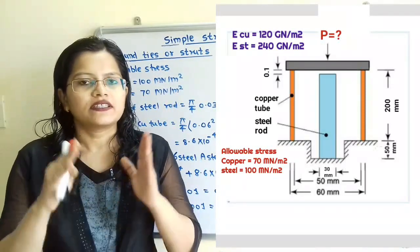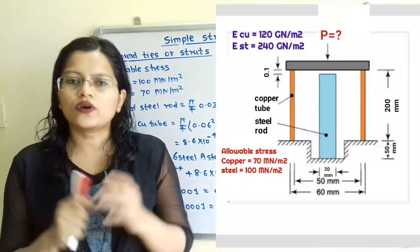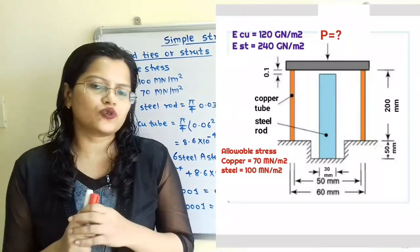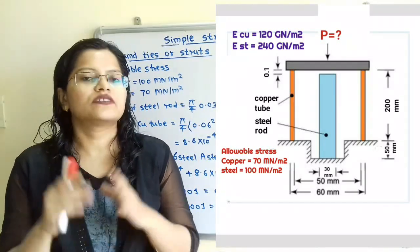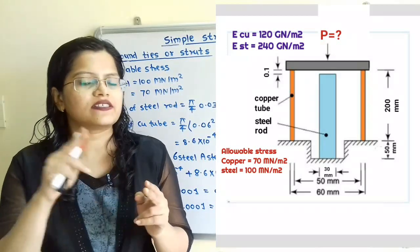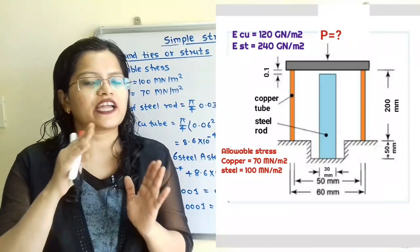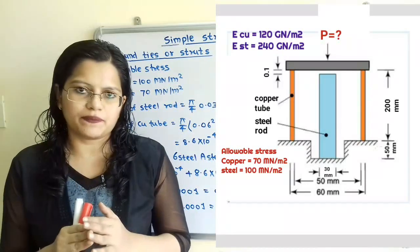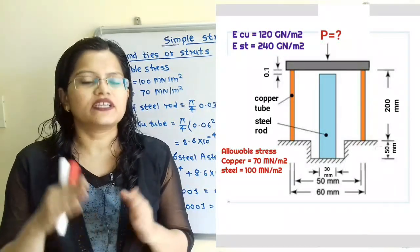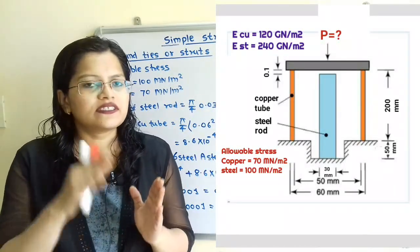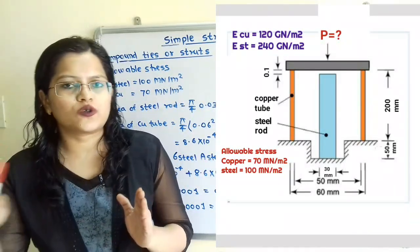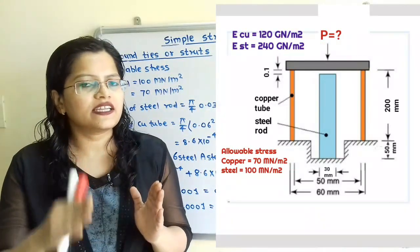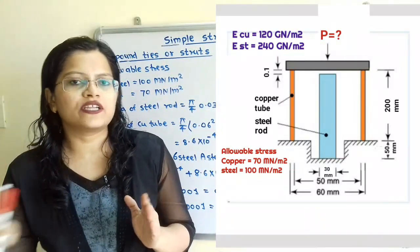In this case, there are two conditions. The total load P is shared by the two materials. Suppose there are two materials A and B, then we can say that P is equal to Pa plus Pb. The second condition is that the strain produced is also equal, so we can say that strain in A is equal to strain in B.